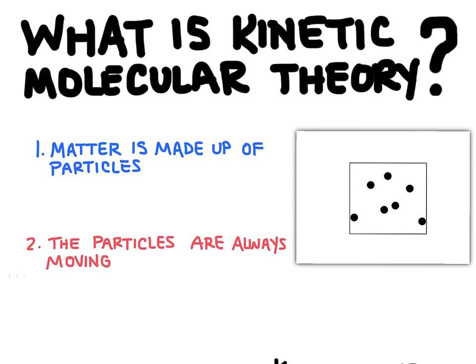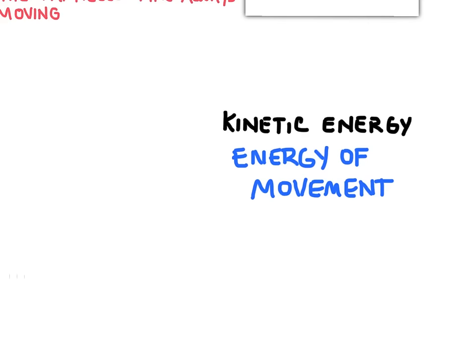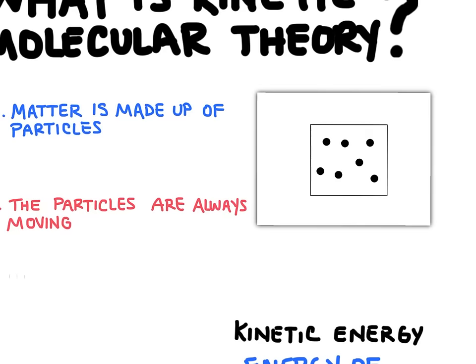This animation here would be what a gas looks like — the molecules or particles are spread out and they're moving pretty rapidly. This theory is going to describe the amount of kinetic energy that these particles possess. Kinetic energy is the energy of movement. The more kinetic energy a particle has, the faster it will move, and the less kinetic energy it has, the slower it's going to move. These particles are called atoms and molecules.